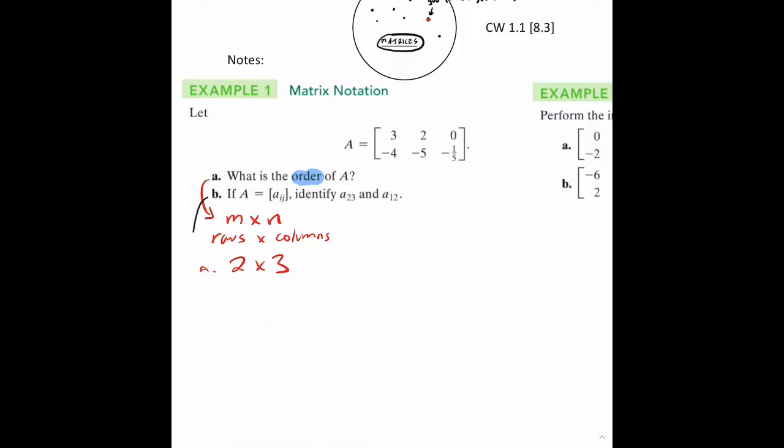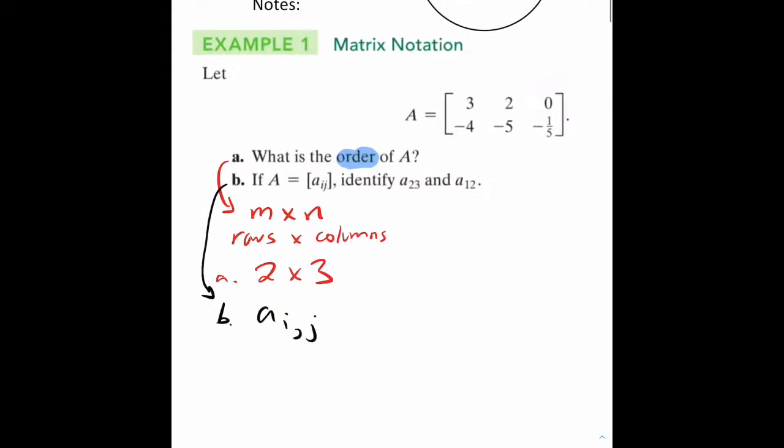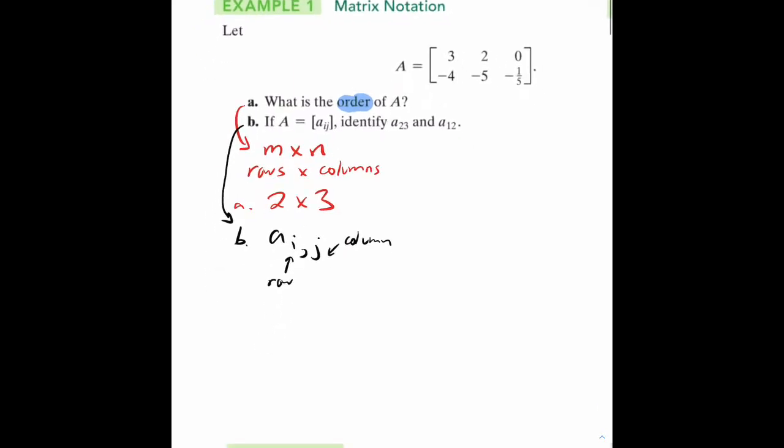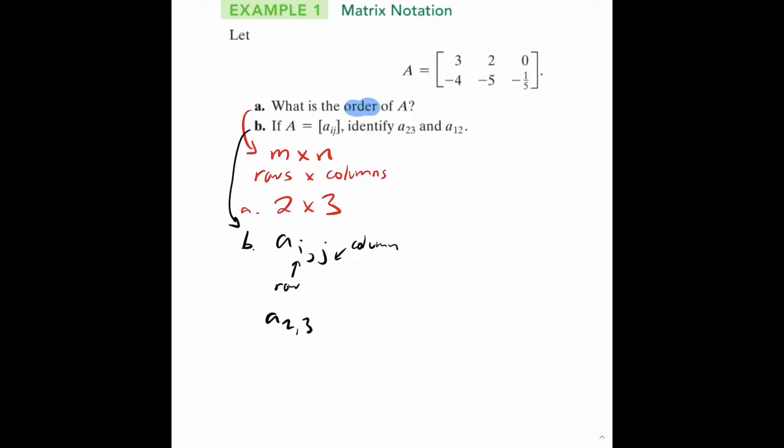For B, it says a sub i,j. Some people write it as a_i,j because it makes it clearer to look at. This refers to a particular element inside the matrix - i is the row and j is the column entry. For example, a_2,3 refers to the second row, third entry, which is negative 1/5.